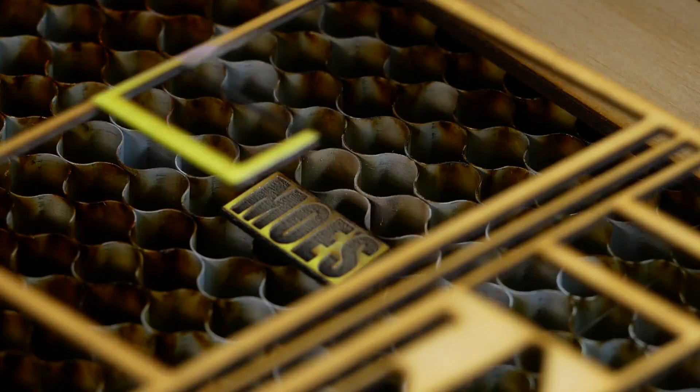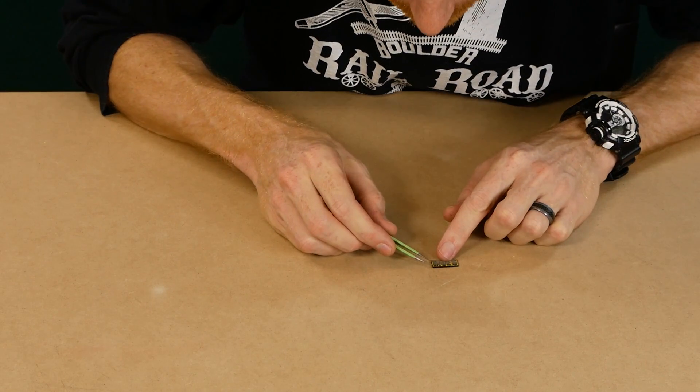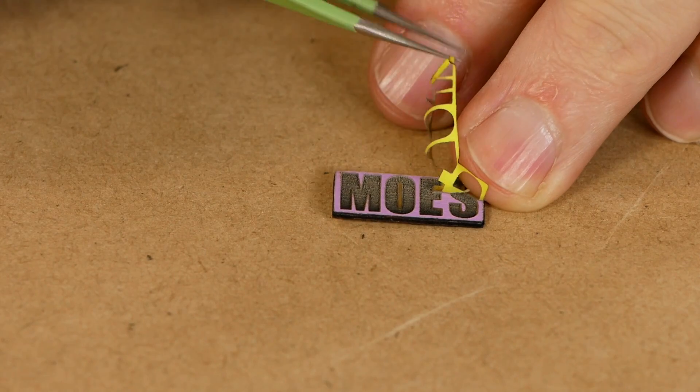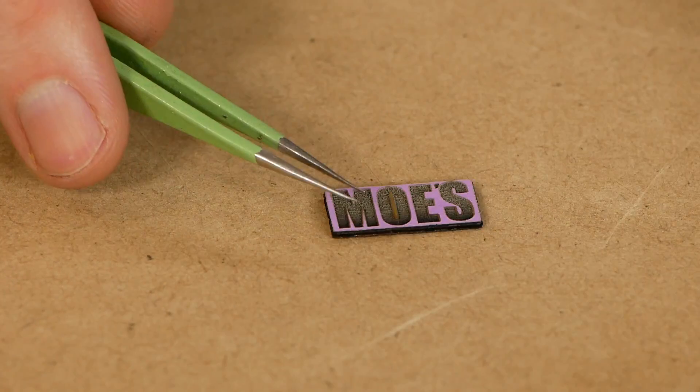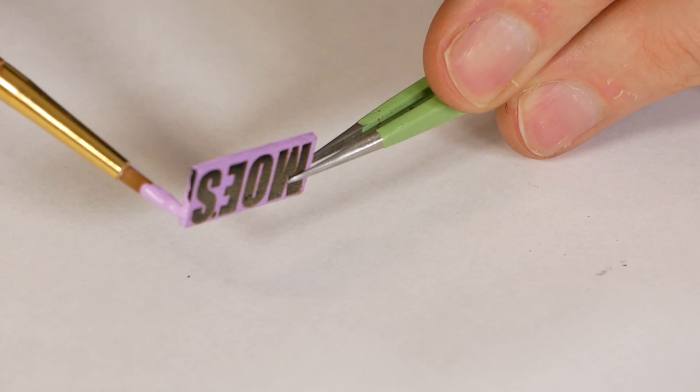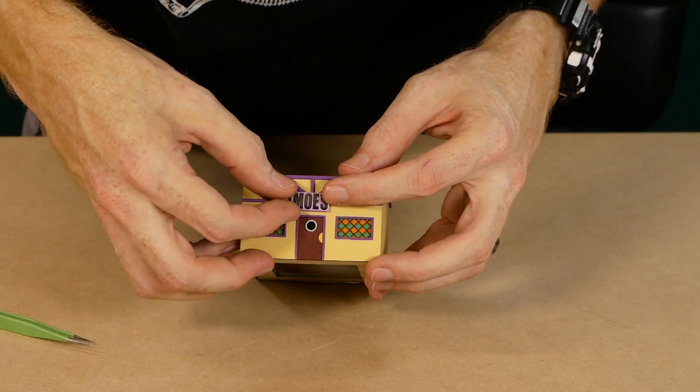The reason the sticky note paper is applied first is so the smoke from the engraving doesn't stain the surface of the sign. The edges are painted and then the sign is pressed into position with some tacky glue.